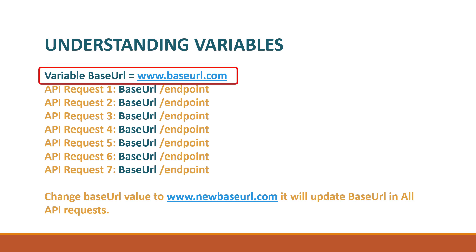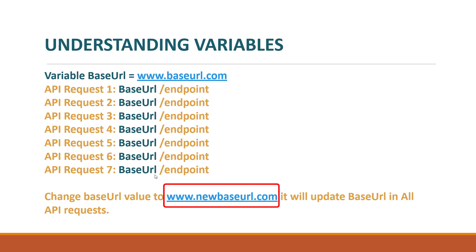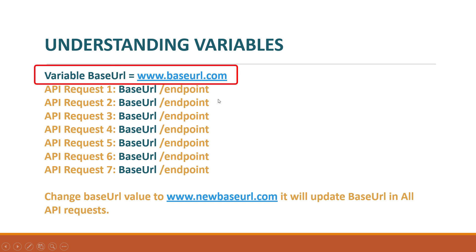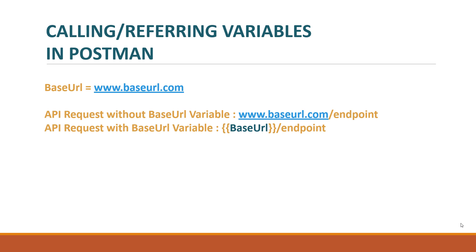Now see how variables help in this case. What you can do is create a variable called base URL and assign it the value of that base URL. Then pass that variable into your API requests. If you get a change request with a new URL, you simply go to that base URL variable, update the value to www.newbaseurl.com, and that's it. This will automatically update the value in all your requests.